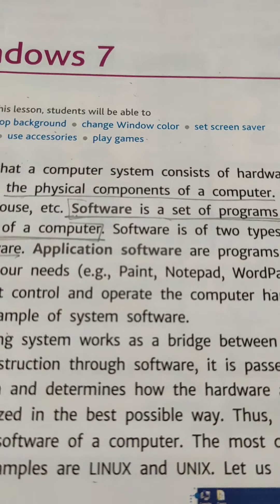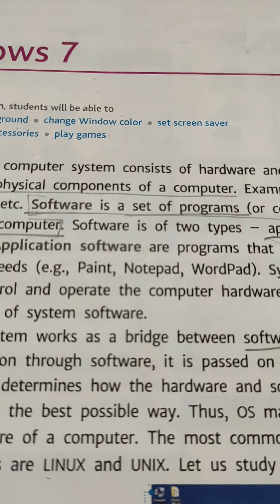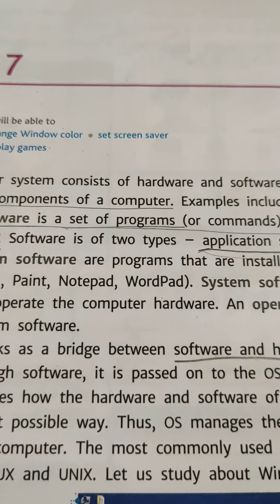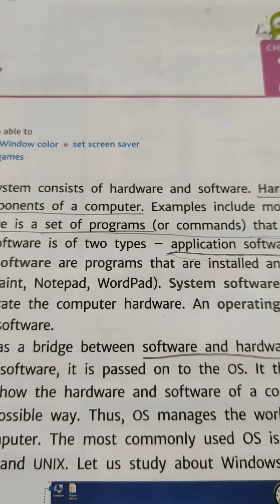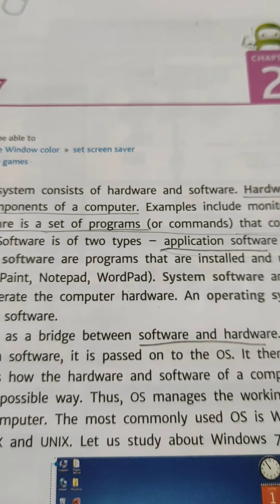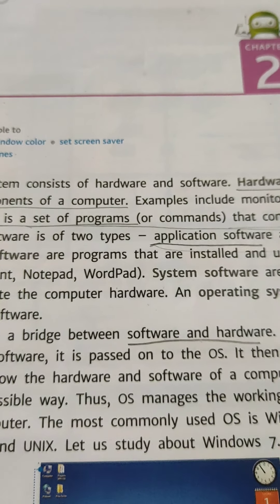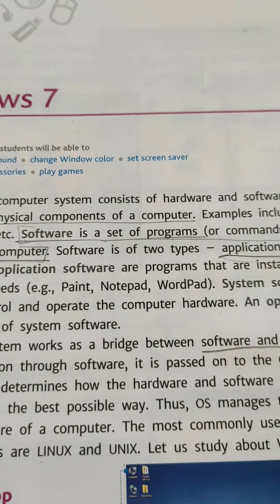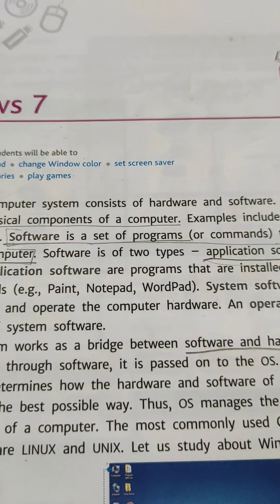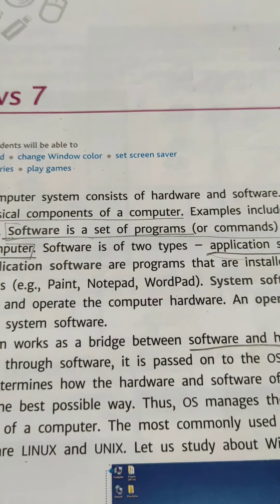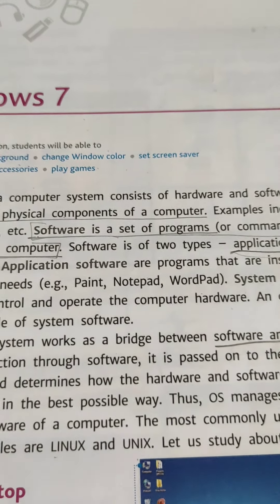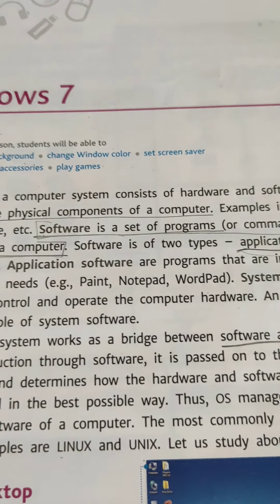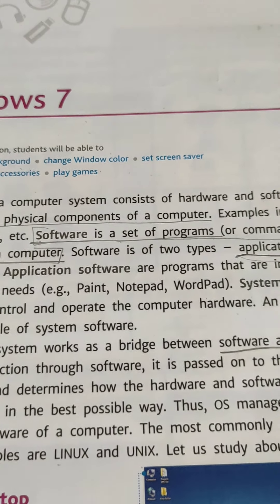Next is software. Software is a set of programs that controls the working of a computer. There are 2 types of software: application software and system software. Application software is software we can install according to our need, like Paint, WordPad, Notepad, and Tux Paint.